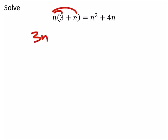So I've got 3n plus n squared equals n squared plus 4n. But we want everything on one side of the equal sign.